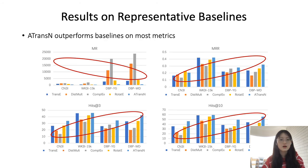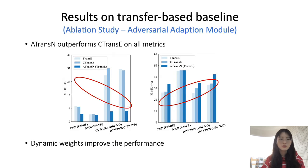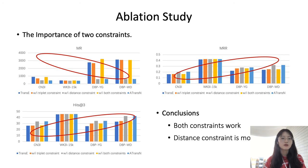These are the results on representative baselines. As we can see in these figures, the red circle represents better trends on the metrics, and our model outperforms baselines on most metrics. This is the result on the transfer-based baseline C-TransE, which also serves as an ablation study on the adversarial adaptation model. As we can see, our model outperforms C-TransE on all metrics, which means the dynamic weights improve performance. We also conduct an ablation study on the two constraints.